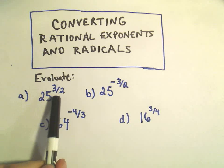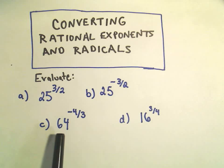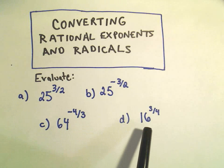So we have 25 to the 3 halves, 25 to the negative 3 halves, 64 to the negative 4 thirds, and 16 to the positive 3 fourths.